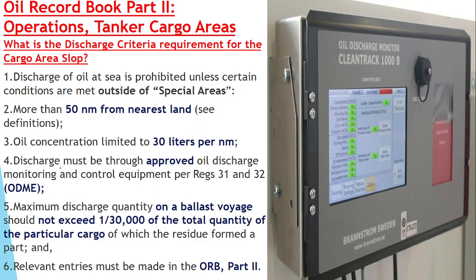So whenever you are carrying out the discharge: the ship should be outside the special area, it should be 50 nautical miles from the nearest land, the concentration should not be more than 30 liters per nautical mile, and the equipment used for discharge should have type approval from the IMO. Additionally, the total quantity discharged should not exceed 1/30,000 of the total quantity of the particular cargo carried. All entries should be made in the ORB Part 2.